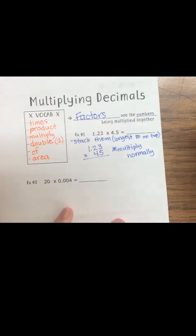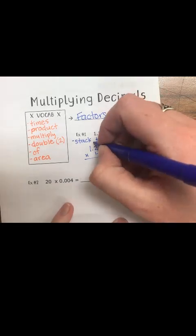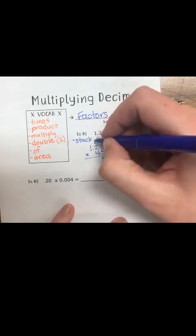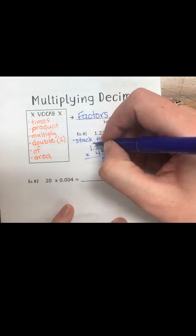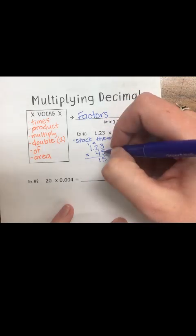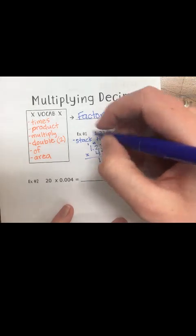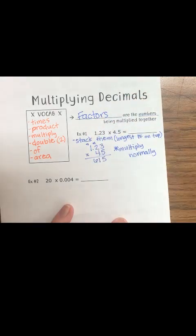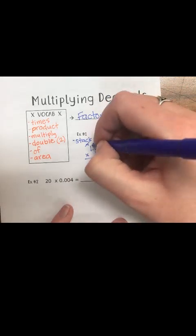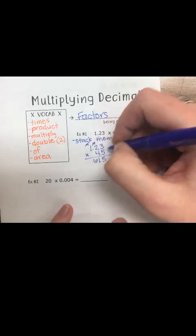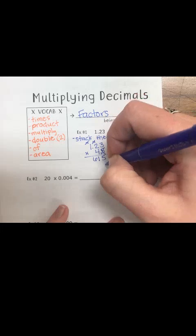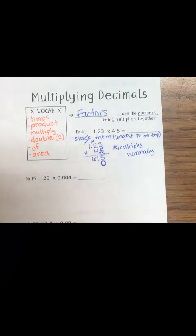Five times three is 15, so I put my one up top and five down here. Five times two is 10, plus one is 11, so I carry my one and drop the one down. Then five times one is five, plus one is six. Once I've done five times three, two, and one, I mark those out — I'm done with that row. But when I go to my next level, do not forget to drop your zero.